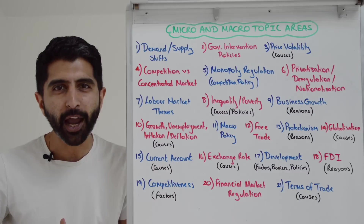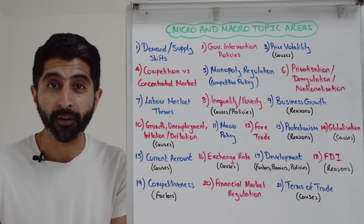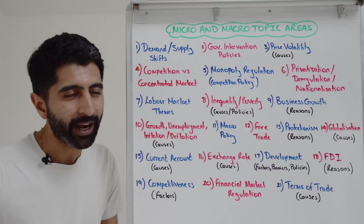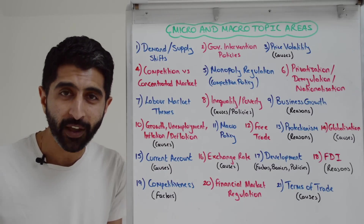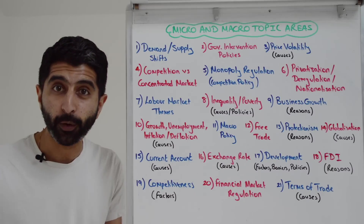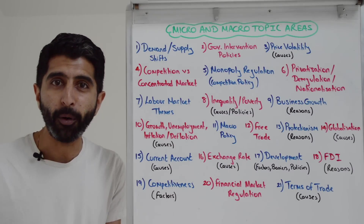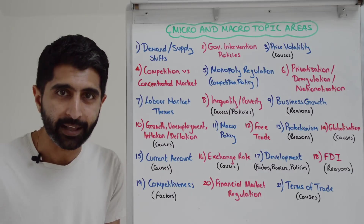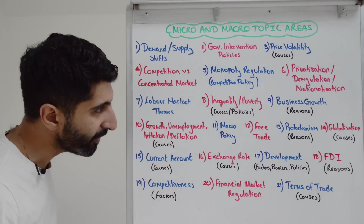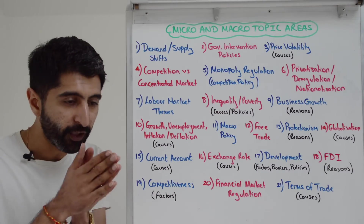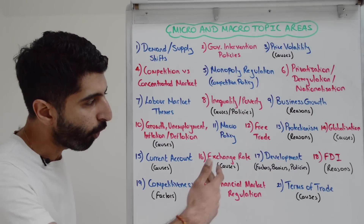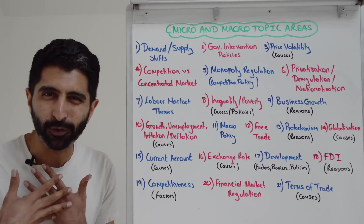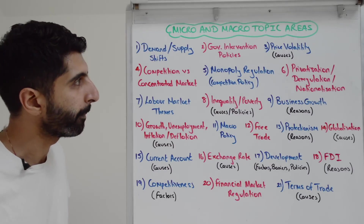This video is going to guide you with all the major topic areas that could feature in Paper 3 as a big essay question. Know that it might not just be micro/macro effects you need to talk about — you might need to go into micro/macro causes, policies, factors, or reasons. I'll be guiding you where that is something you need to do. Once you have these topic areas and make your lists of micro/macro effects or whatever else you might need, your brain will then be ticking and you'll be able to do it very easily when Paper 3 comes your way.